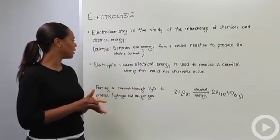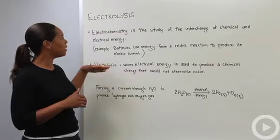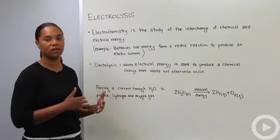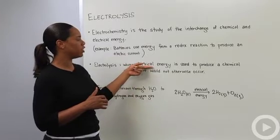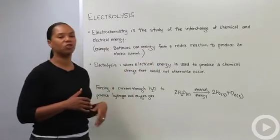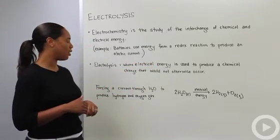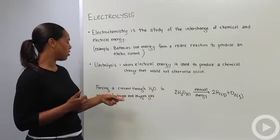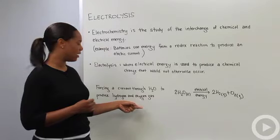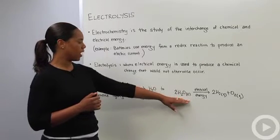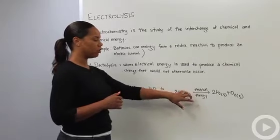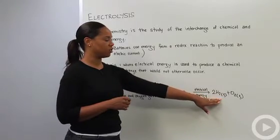More specifically under electrochemistry, we have the process of electrolysis. That's when electrical energy is used to produce a chemical change that would otherwise not occur. For example, if you forced a current through water to produce hydrogen gas and oxygen gas, that reaction looks like this: two waters plus electrical energy yields two moles of hydrogen gas and one mole of oxygen gas.